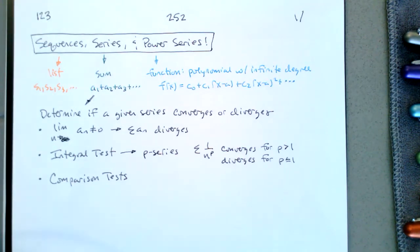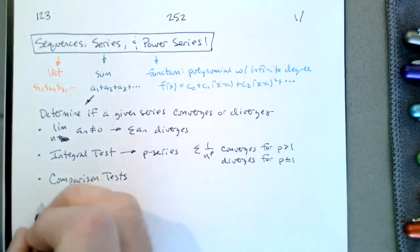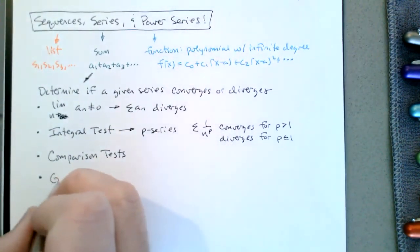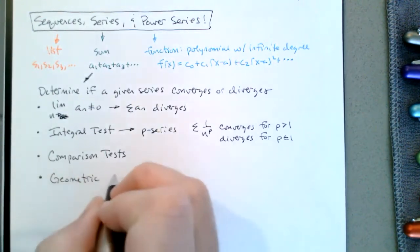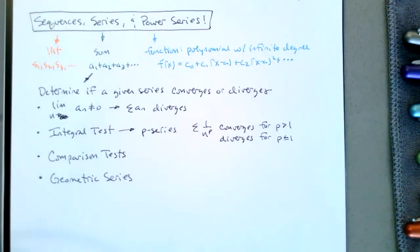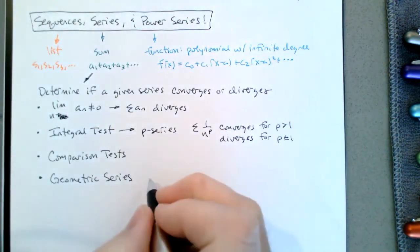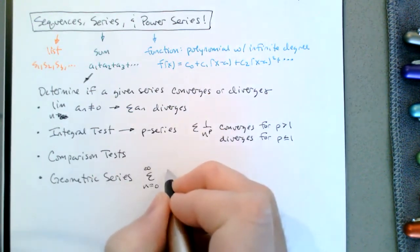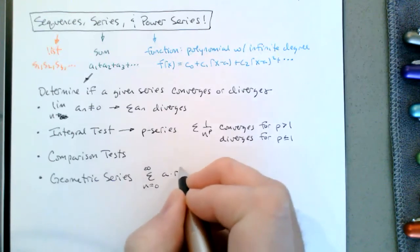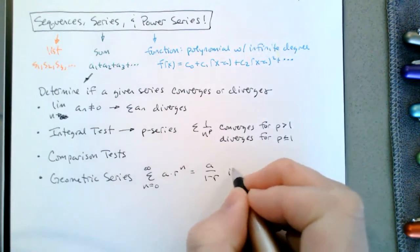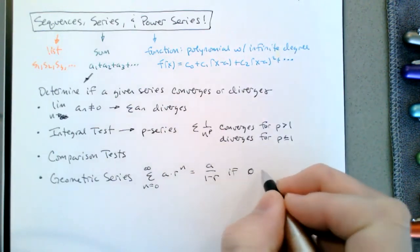Yesterday we added to this list with geometric series. We looked at the sum of a finite geometric series, and then used that to find the sum of an infinite geometric series. The sum as n goes from 0 to infinity of a times r to the n is a over 1 minus r, if the absolute value of r is between 0 and 1, and diverges otherwise.